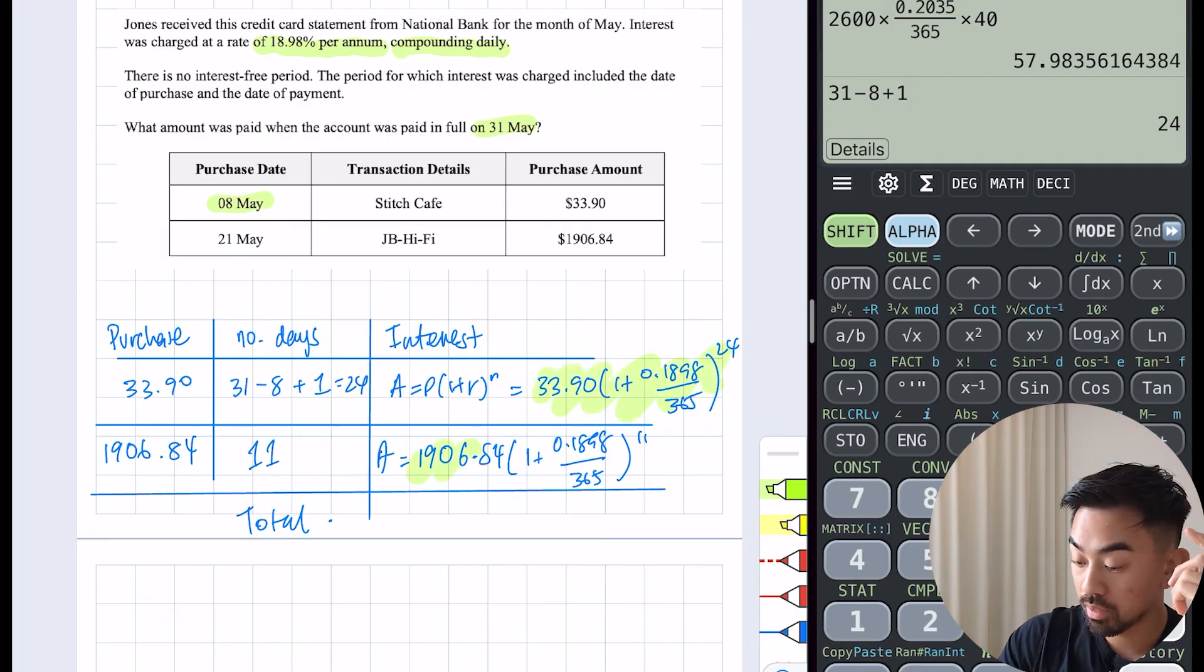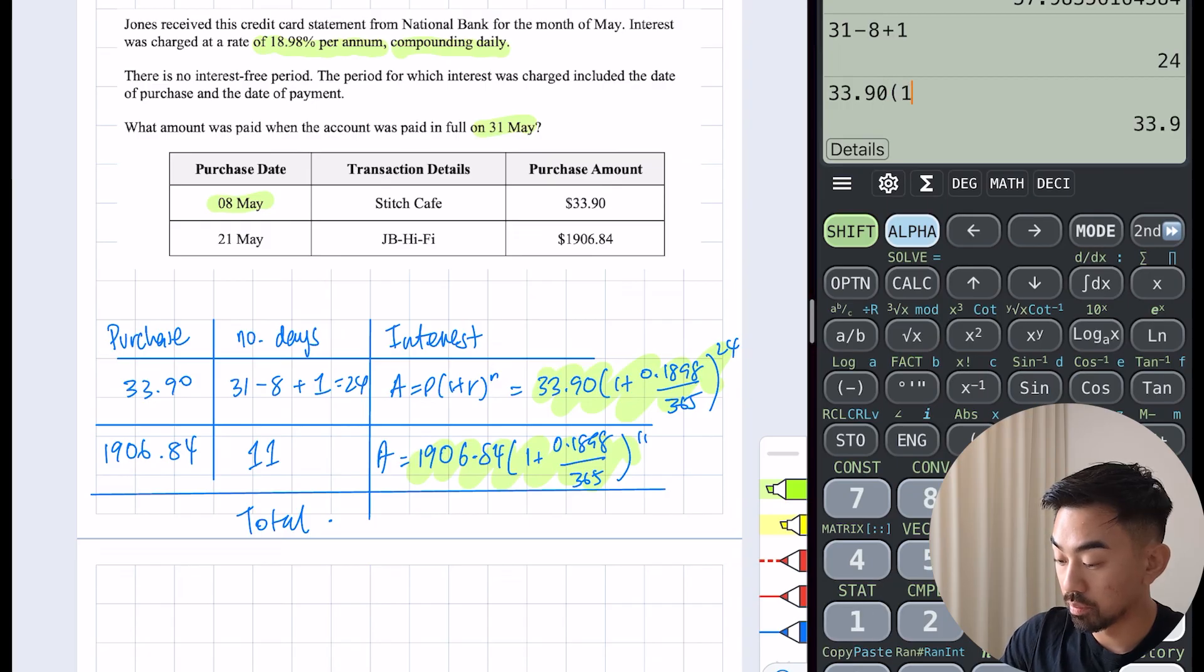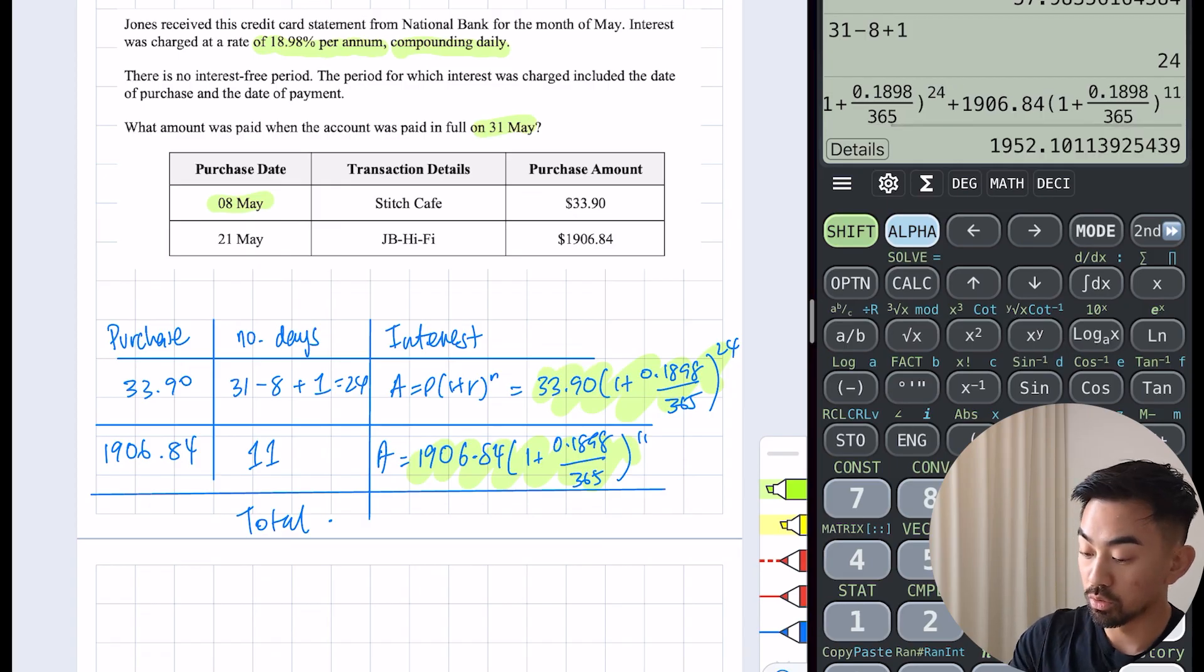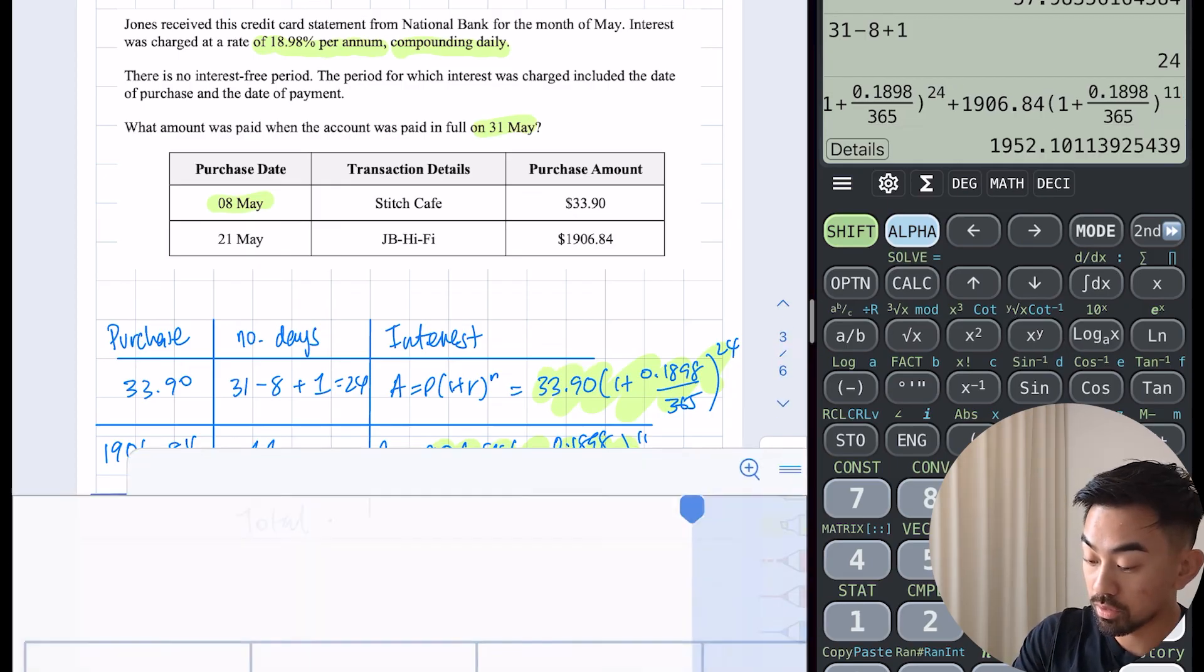Once again compound, so 1906.84 times (1 plus 0.1898 over 365) to the power of 11. Now I just put both of this into the calculator to work out my total. 33.90(1 + 0.1898/365)^24 plus 1906.84(1 + 0.1898/365)^11. It looks like my total payments are going to be $1952.10.